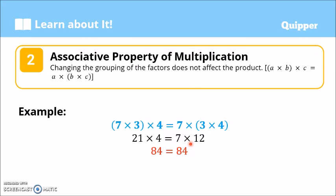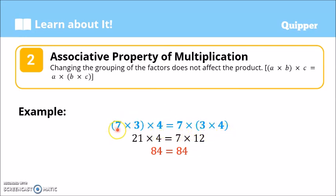We also have the associative property of multiplication. Changing the grouping of the factors does not affect the product. So we have (A times B) times C is equal to A times (B times C). Example: (7 times 3) times 4 equals 7 times (3 times 4). Unahin natin 7 times 3 — that's 21, times 4 gives us 84. Kung uunahin natin 3 times 4 — that's 12, times 7 is also 84. Pareho lang yung sagot — that's the associative property of multiplication.